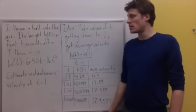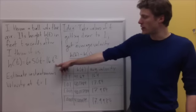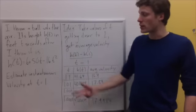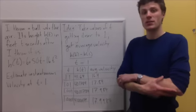So I throw a ball into the air and its height, h of t, in feet, t seconds after I throw it into the air is given by this equation: h(t) = 6 + 50t - 16t^2. I'd like us to estimate its instantaneous velocity at time t equal to 1.